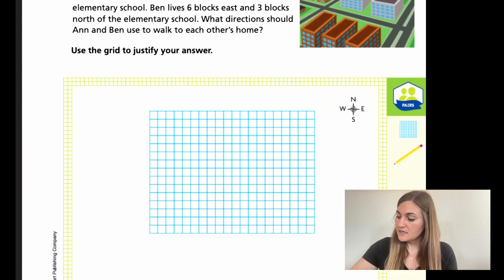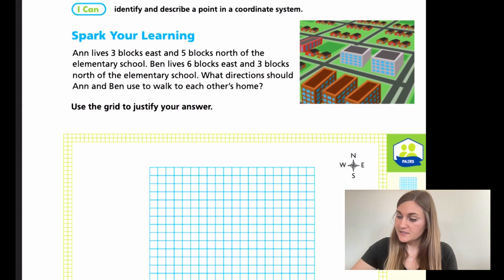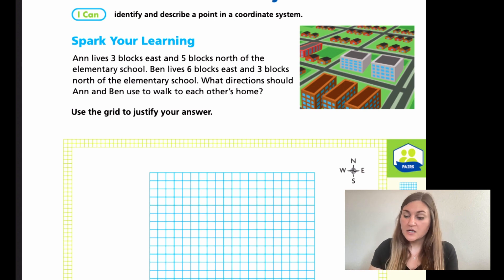So moving into the lesson, we're on page 473. We have a Spark Your Learning. It says Ann lives three blocks east and five blocks north of the elementary school. Ben lives six blocks east and three blocks north of the elementary school. What directions should Ann and Ben use to walk to each other's home? Notice that we have the little directional compass in the upper right-hand corner. That's super helpful.